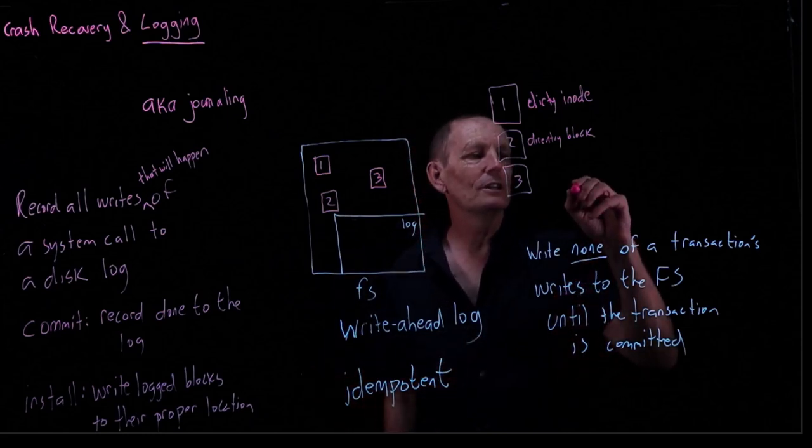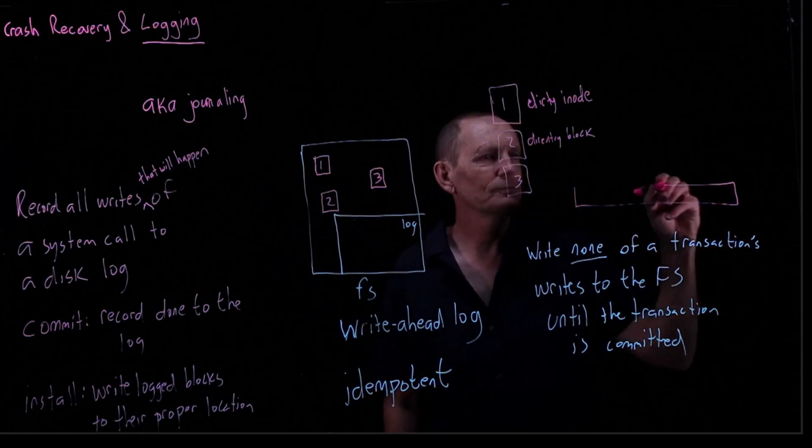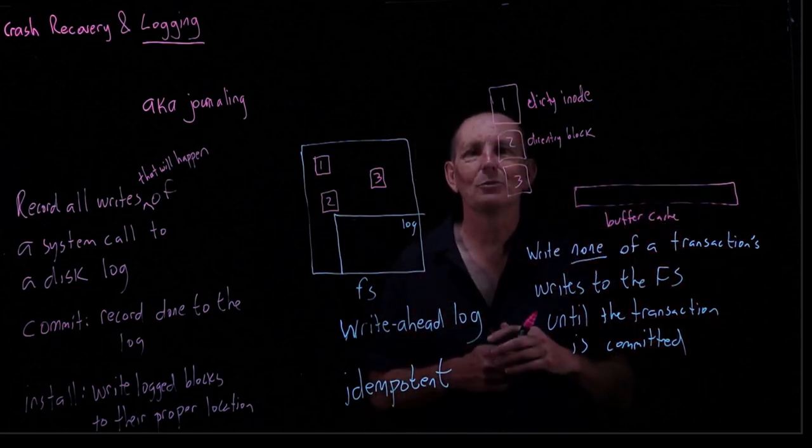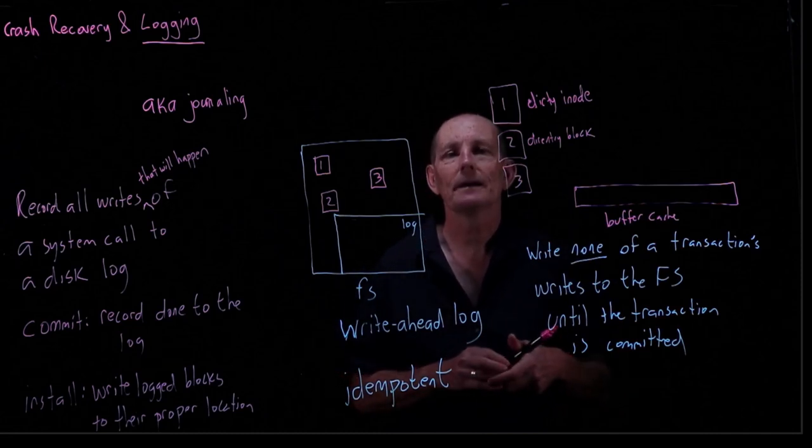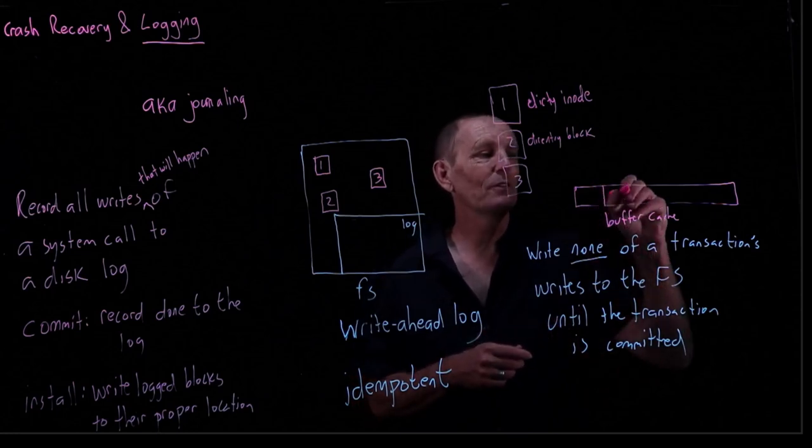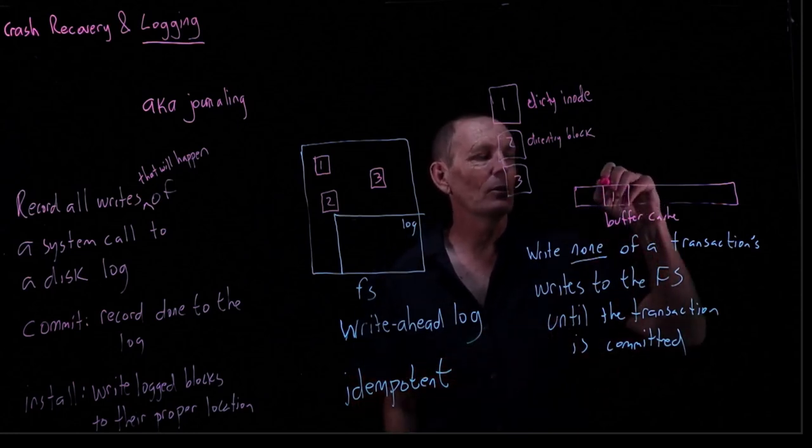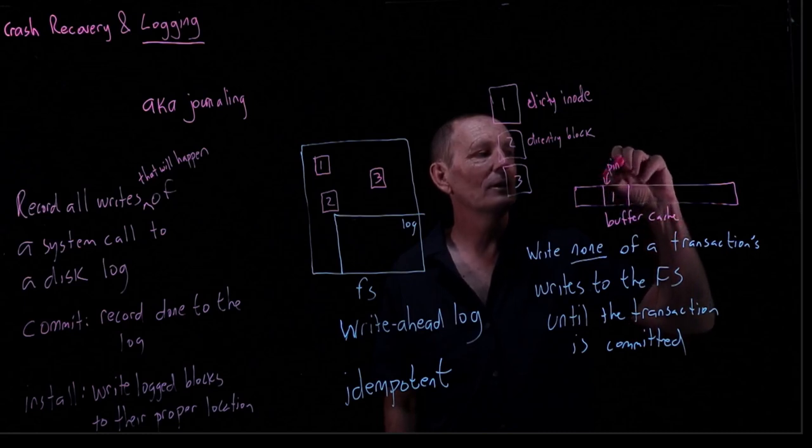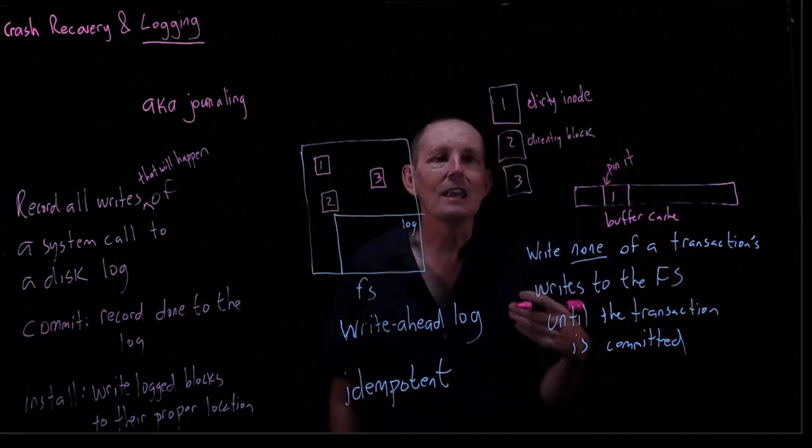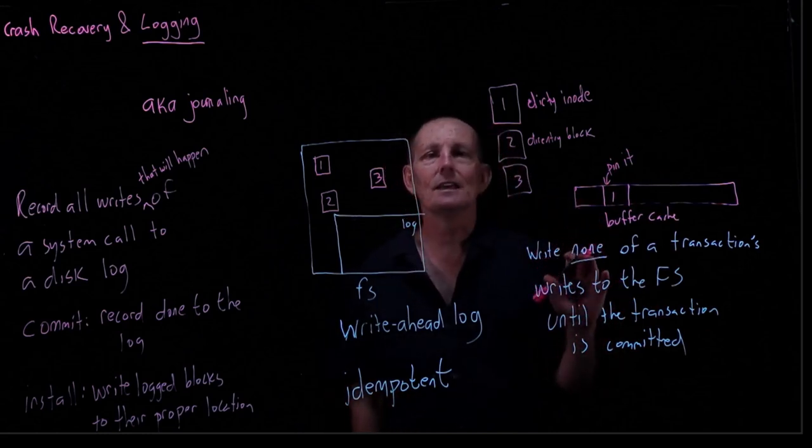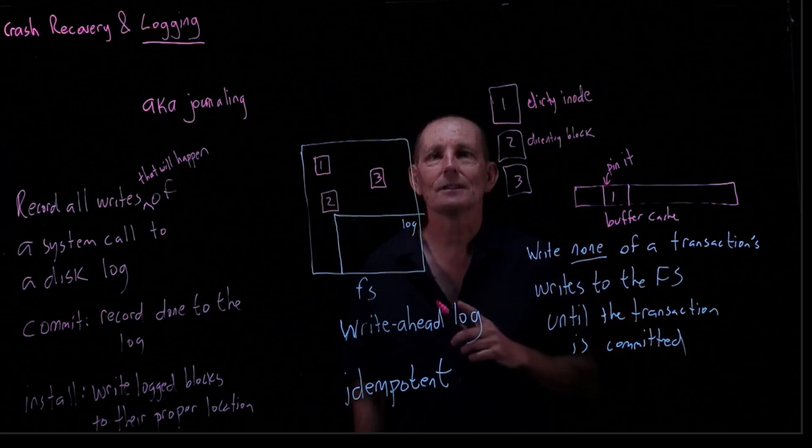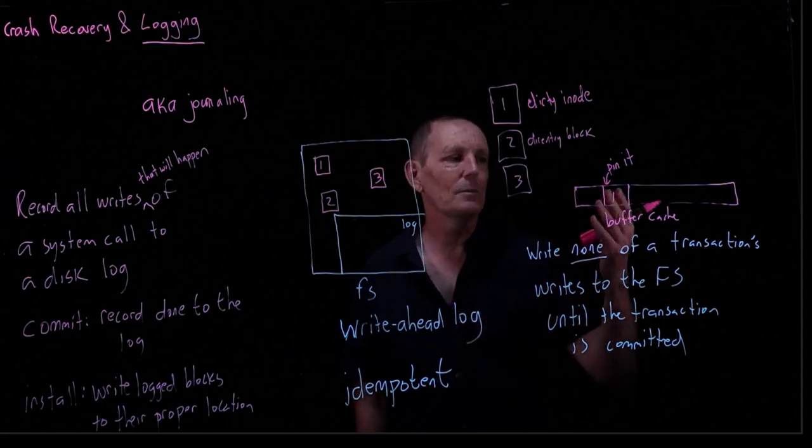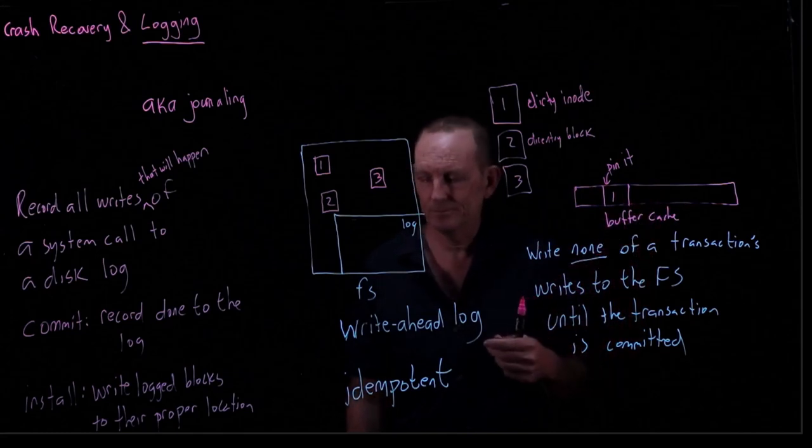And the other thing we need to do is, when we've got a block in here, let's say block number one, while we're in the middle of a transaction, we need to pin it, that is, not allow it to be evicted. So set a bit in it that says, this is in use in a transaction, therefore, do not write this back to the disk. On a commit, we'll go ahead and unpin.